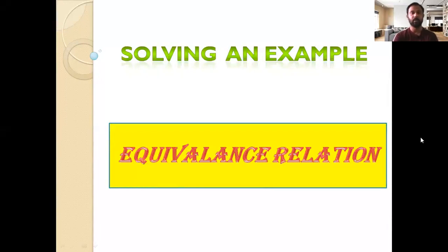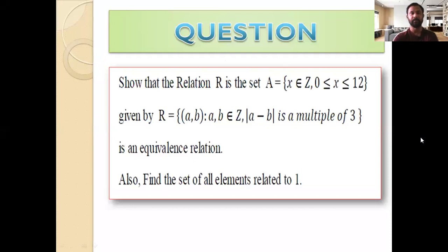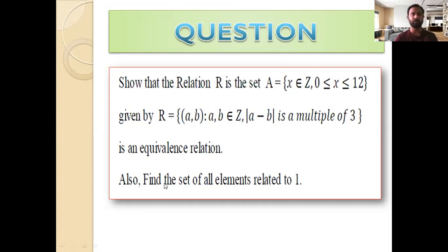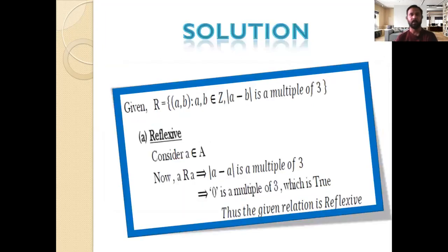Today we will see how a given relation can be shown as an equivalence relation. Consider the question: show that the relation R in the set A = {x ∈ Z : 0 ≤ x ≤ 12}, given by R = {(a, b) : a, b ∈ Z and |a - b| is a multiple of 3}, is an equivalence relation. Also find the set of all elements related to 1.